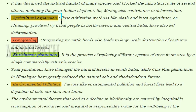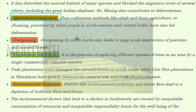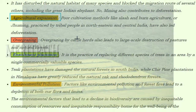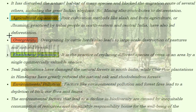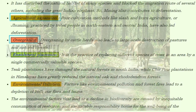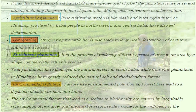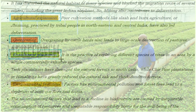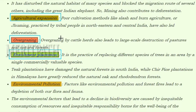Agricultural expansion: poor cultivation methods like slash-and-burn agriculture (jhum) practiced by tribal people in northeastern and central India have also led to deforestation. Overgrazing by cattle herds leads to large-scale deforestation of pastures and natural forests. Enrichment plantation — the practice of replacing diverse tree species with a single commercially valuable species — has damaged natural forests, such as eucalyptus in south India and pine in the Himalayas, greatly reducing natural oak and rhododendron forests.